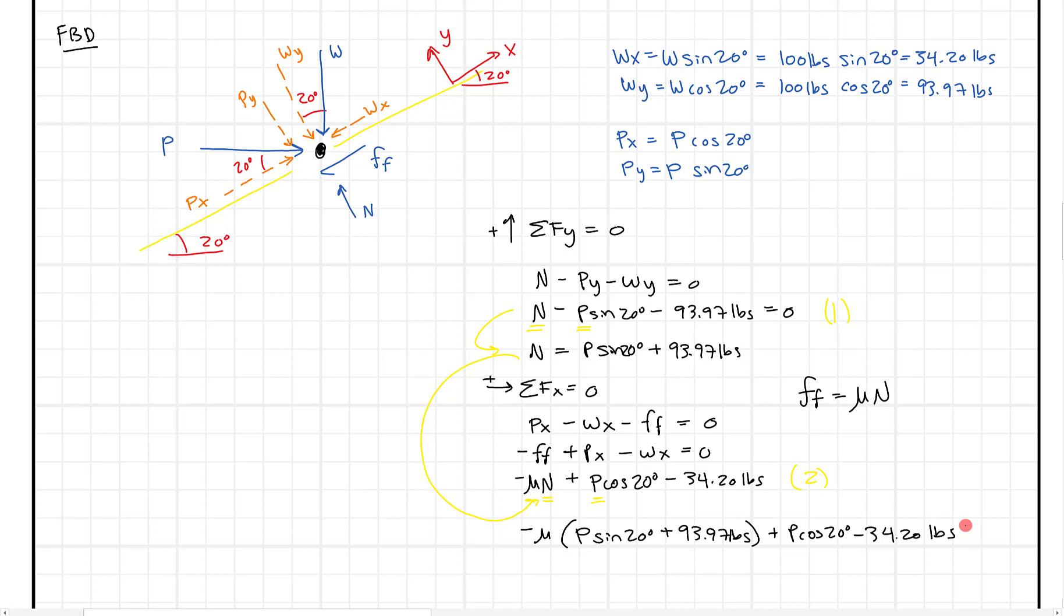Okay, so this is just plugging in. And now, again, I'm going to start solving here, but I can distribute this mu out. And for mu, I'm going to put in 0.4 now. So I know this is minus 0.4 times P sine 20 minus 0.4 times 93.97, and then we can still have plus P cosine 20 minus 34.20 pounds. And we can't forget that these equals 0. And so we've got to remember that.